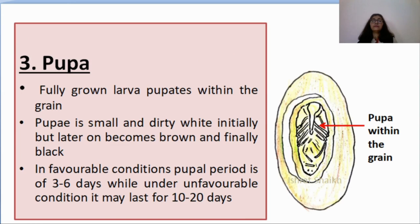The third stage is the pupa or pupal stage. Pupa in Latin means doll, and pupae is its plural. The fully grown larva pupates within the grain. The pupa is small and dirty white initially, but later becomes brown and finally black. In favorable conditions, the pupal period is 3 to 6 days, while under unfavorable conditions it may last up to 10 to 20 days.